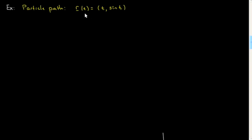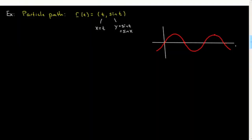Let's start with plotting the path itself. What you want to do is realize that x is the same as t, and so therefore y is equal to sine t, which would therefore be equal to sine of x. So the graph of this is simply y equals sine x, and I've done that down here. So here we go — x, y — and this is the path of the particle.